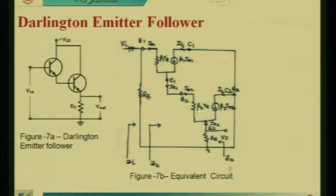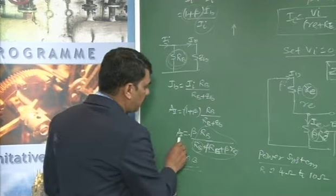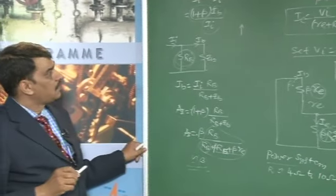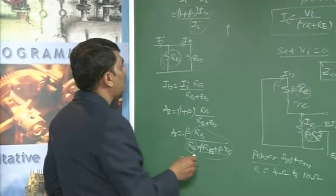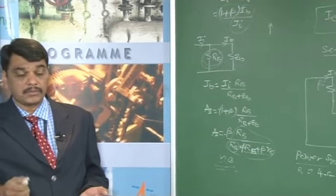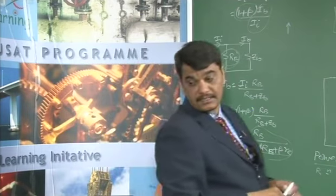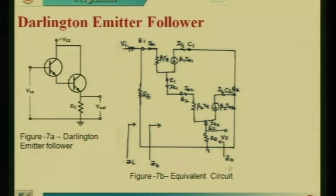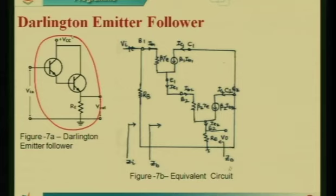If you want a further increase in power, in a single stage the current gain Ai equals beta times Rb — if I want to increase further and decrease input impedance further, then the Darlington pair is used. The emitter follower stages are cascaded, meaning two common collector configurations are connected together, giving higher input impedance and lower output impedance. This is shown in figure 7a, where two transistors are connected back to back.